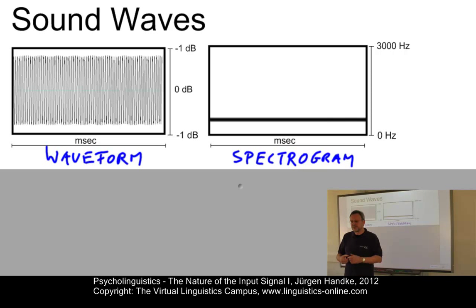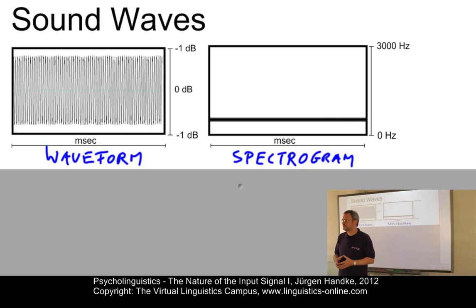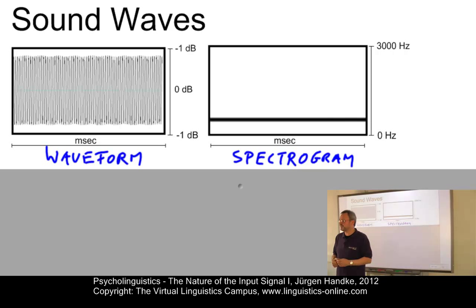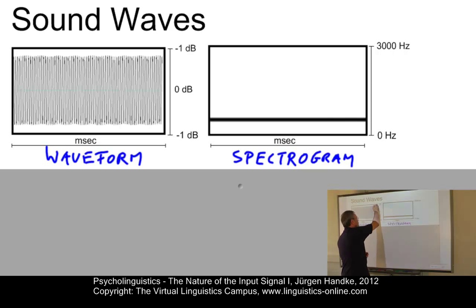The waveform view is a two-dimensional view where you have time information on the horizontal axis. Within this, we have frequency information by means of cycles per time unit. And then we have the amplitude on the vertical axis.